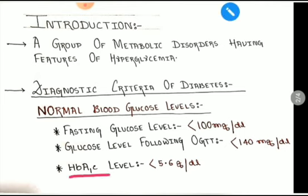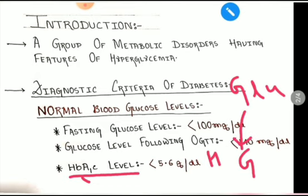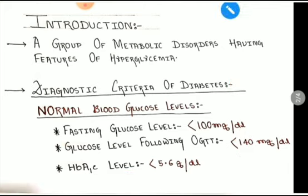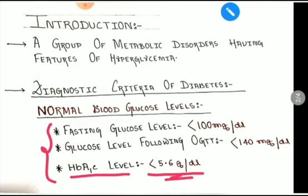The next criterion for measuring normal blood glucose level is the HbA1c level. HbA1c refers to glycosylated hemoglobin, which involves the non-enzymatic attachment of glucose to the globin chain of hemoglobin. Hemoglobin comprises two parts: the heme and the globin. Glucose non-enzymatically binds to the globin component of hemoglobin, forming glycosylated hemoglobin. The normal HbA1c level is less than 5.6%.